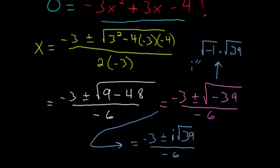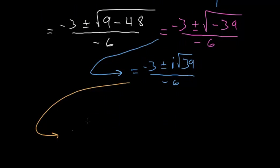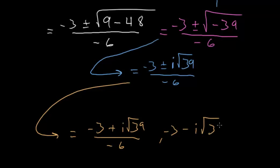So our two roots are now -3 plus i√39 divided by -6, and -3 minus i times the square root of 39 divided by -6.